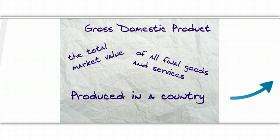And then it's everything that's produced in a country. What that means is that we're only counting things that are made on American soil. We're not counting things that American businessmen working in other countries are making. But we are counting the things that foreign businessmen are doing here on our soil in the United States.